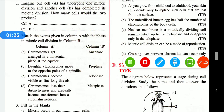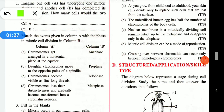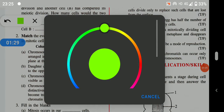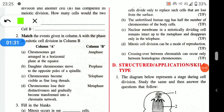Now match the column: chromosomes get arranged in a horizontal plane at the equator — the correct answer is metaphase. The second entry: daughter chromosomes move to the opposite pole along the spindle — that is anaphase.